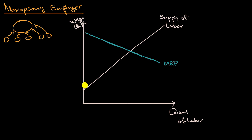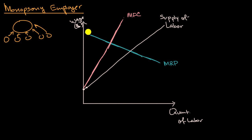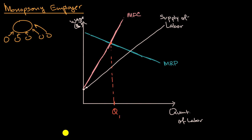So the marginal factor cost curve looks like this — this is, of course, when we're dealing with a monopsony employer. The rational quantity of labor for this firm to hire is found by keeping hiring as long as every incremental unit of labor generates more revenue than it costs. So as long as the marginal revenue product is higher than the marginal factor cost, it keeps hiring until they're equal. It would hire this quantity of labor, and the wage is defined by the supply curve — so this is the wage that the firm would pay.